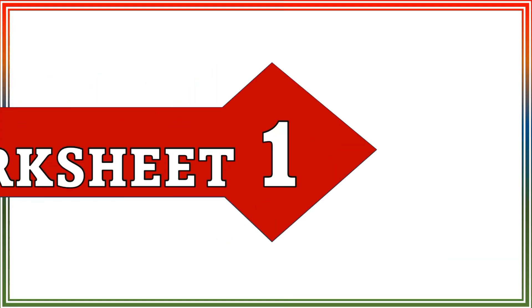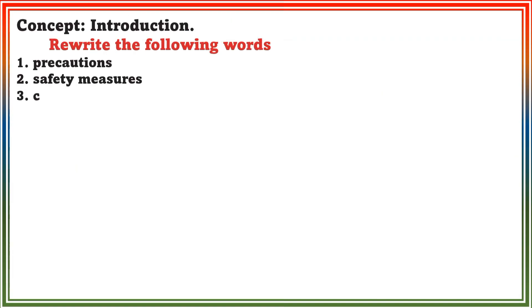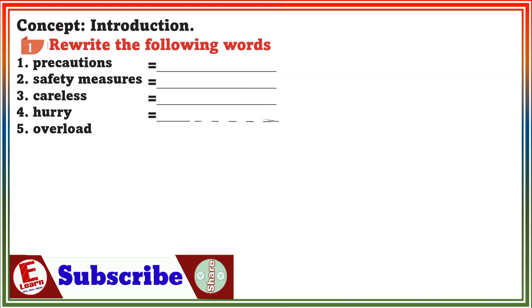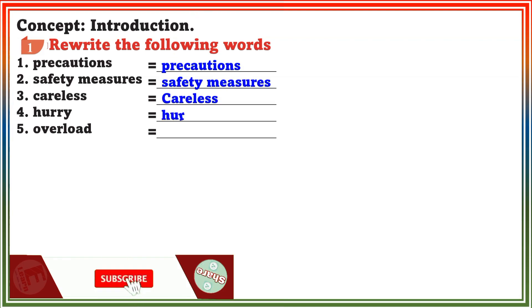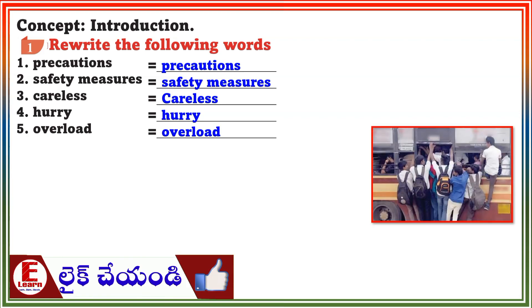Worksheet 1. Concept Introduction. Section 1: Rewrite the following words — Precautions, Safety Measures, Careless, Hurry, Overload.